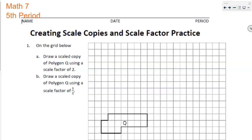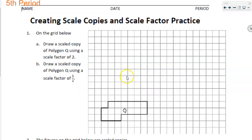The first one I'm going to go over is number one. We have this grid and I want you to draw a scaled copy of this polygon using a scale factor of two. And then part B, we'll repeat that using a scale factor of one-half. Draw a scaled copy of polygon Q using scale factor two — what does that mean? Scale factor of two means you times everything by two. So I need to know what the lengths are originally so I can multiply those lengths by two.